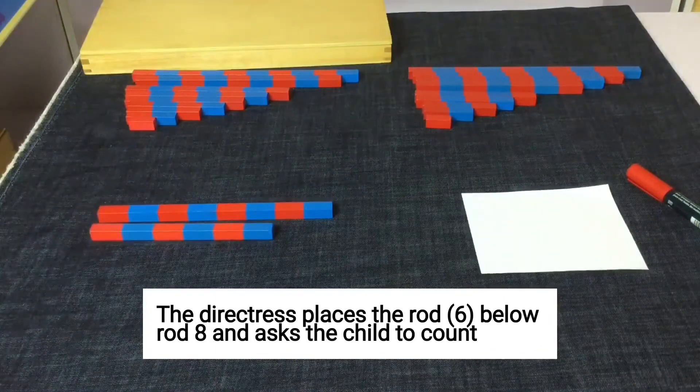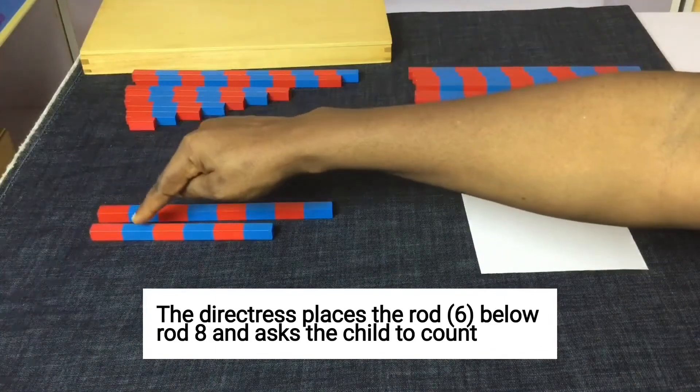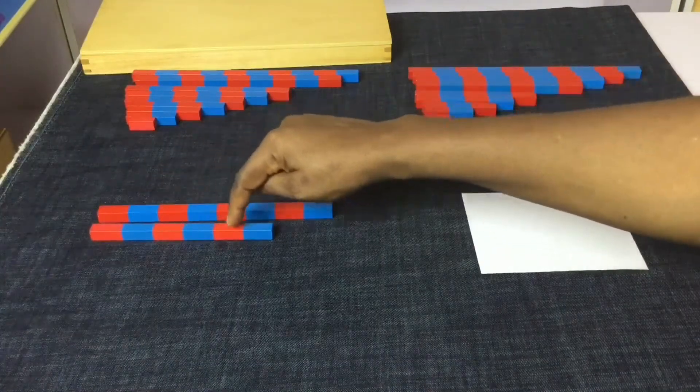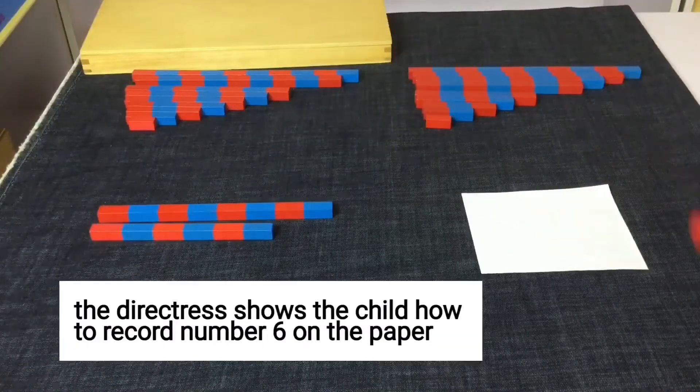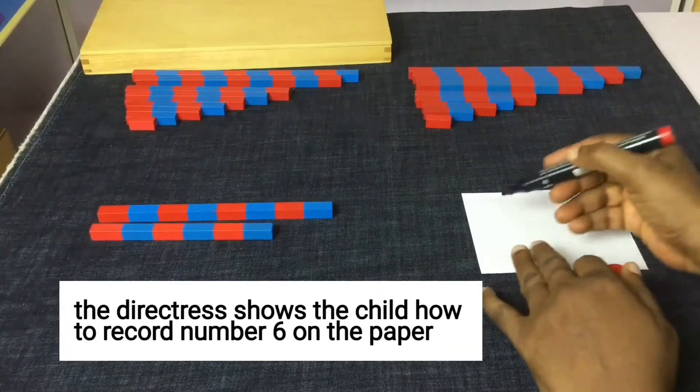The directress places the rod 6 below rod 8 and asks the child to count. The directress shows the child how to record number 6 on the paper.